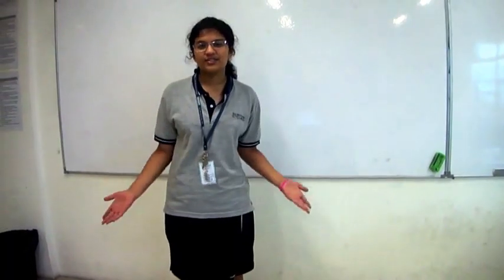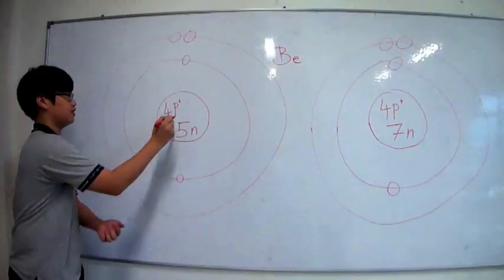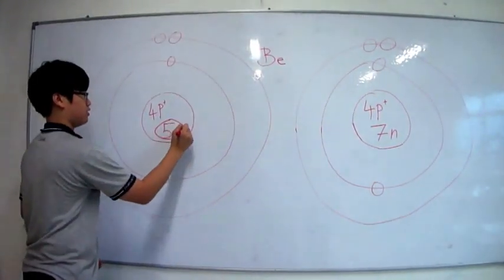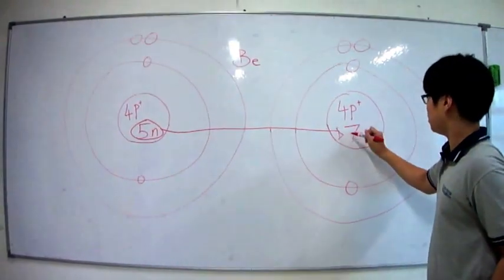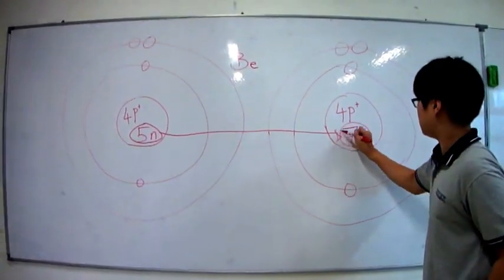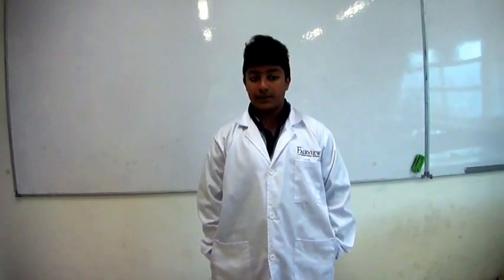Now, what is an isotope? An isotope is each of two or more forms of the same element, which contain equal numbers of protons but different numbers of neutrons in their nucleus, and hence differ in relative atomic mass, but not in chemical properties. In particular, a radioactive form of an element.